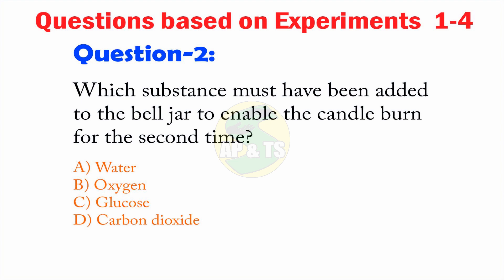Question 2: Which substance must have been added to the bell jar to enable the candle to burn for the second time? A — Water, B — Oxygen, C — Glucose, D — Carbon Dioxide. What is your answer?